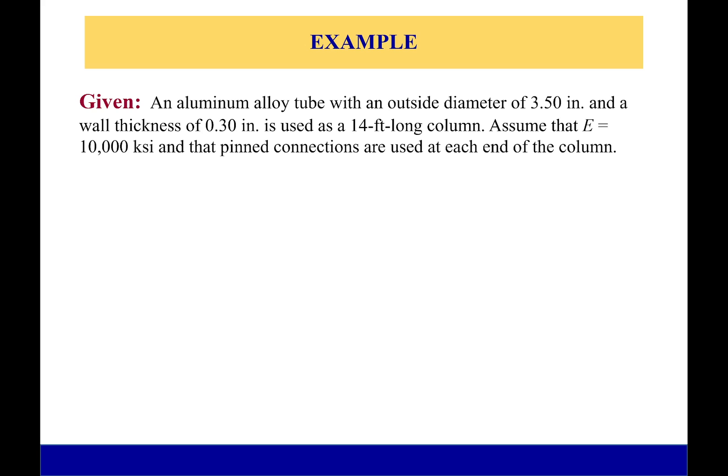Okay, here we go. Let's get to it. We have an aluminum alloy tube with an outside diameter of 3.5 inches and a wall thickness of 0.3 inches, so it's hollow. It's used as a 14-foot long column. We're assuming that our modulus of elasticity E is 10,000 ksi, and we have pinned connections that are used at each end of the column.